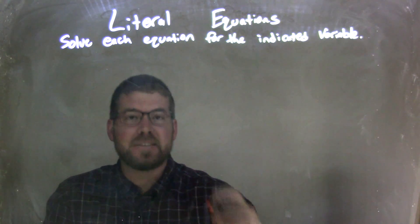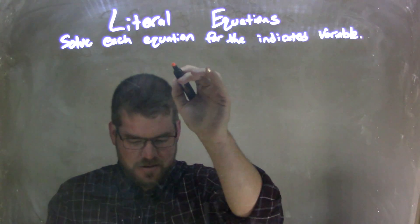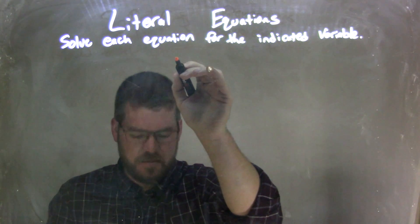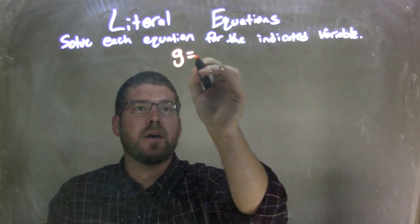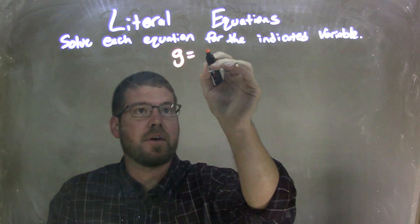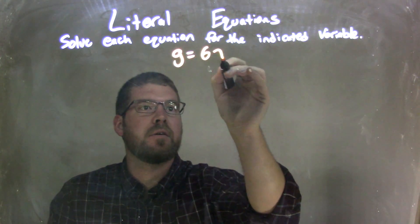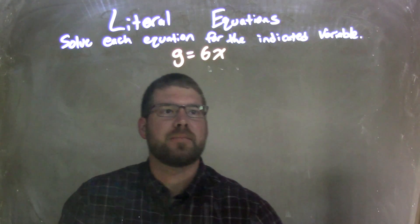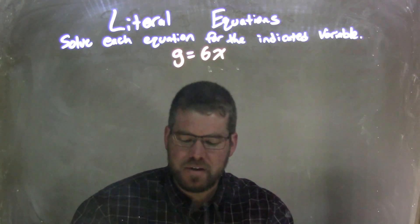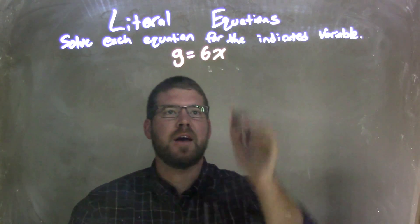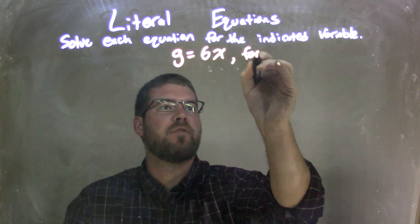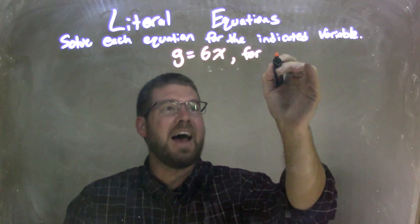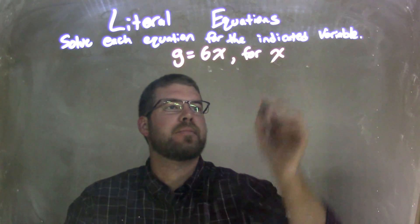So if I was given this equation — g equals 6x — and I needed to solve that for x.